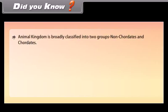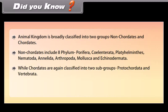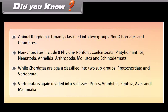Animal kingdom is broadly classified into two groups: non-chordates and chordates. Non-chordates include 8 phyla: Porifera, Coelentrata, Platyhelminthes, Nematoda, Annelida, Arthropoda, Mollusca, and Echinodermata. Chordates are again classified into two subgroups: Protochordata and Vertebrata. Vertebrata is again divided into five classes: Pisces, Amphibia, Reptilia, Aves, and Mammalia.